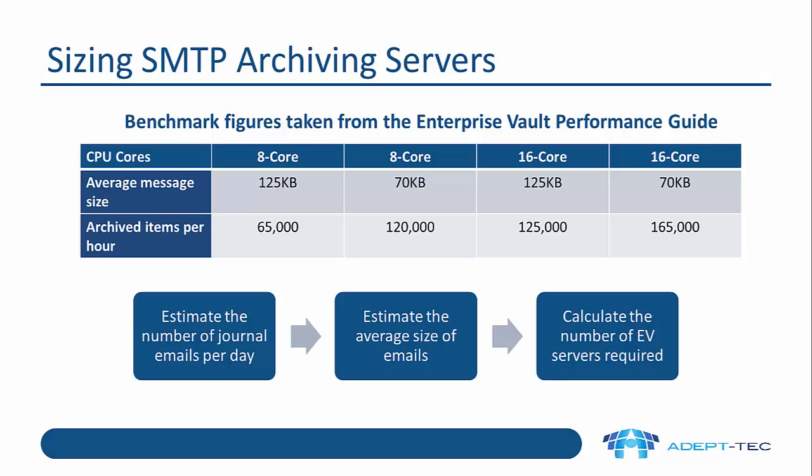It's very important to size SMTP archiving servers properly, and there are benchmark figures in the Enterprise Vault Performance Guide for 1101. For instance, with an eight-core server with 16 GB of RAM and an average message size of 70 KB, you can archive 120,000 items per hour. To size your servers, first estimate the number of journal emails per day — you could do this by switching on journal archiving in Exchange to an email address and counting the messages. Then estimate the average email size, and from that calculate the number of EV servers required using the table in the slide.